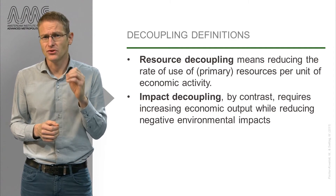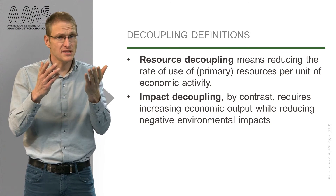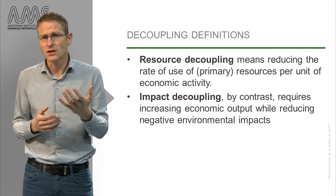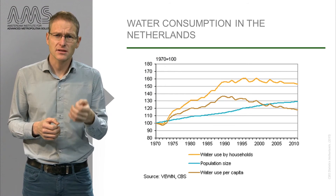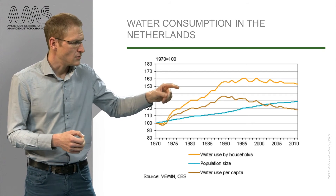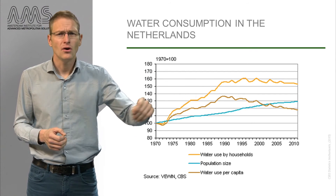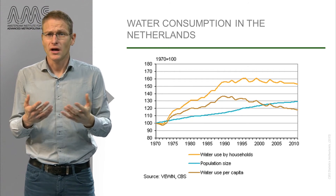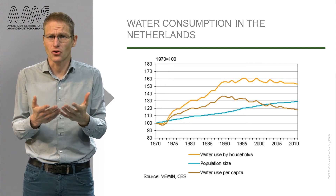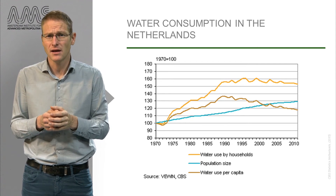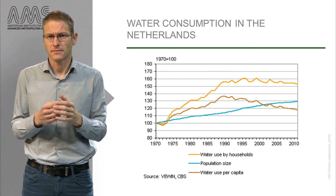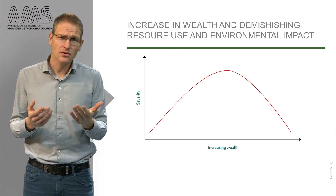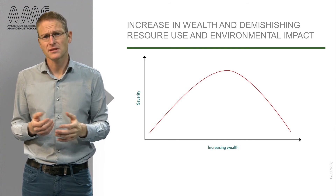This simply means that more economic output can be produced with less resources — so-called resource decoupling — and that environmental impact reduces while economic output increases, so-called impact decoupling. Taking the initial example of water use in the Netherlands, this trend can actually be observed in the recent slight decline of water use per capita. The reason for this decline may be related to new environmental consciousness and more innovation in terms of household appliances and infrastructure. In general, this relationship has been proposed as the environmental Kuznets curve, named after the economist Simon Kuznets.